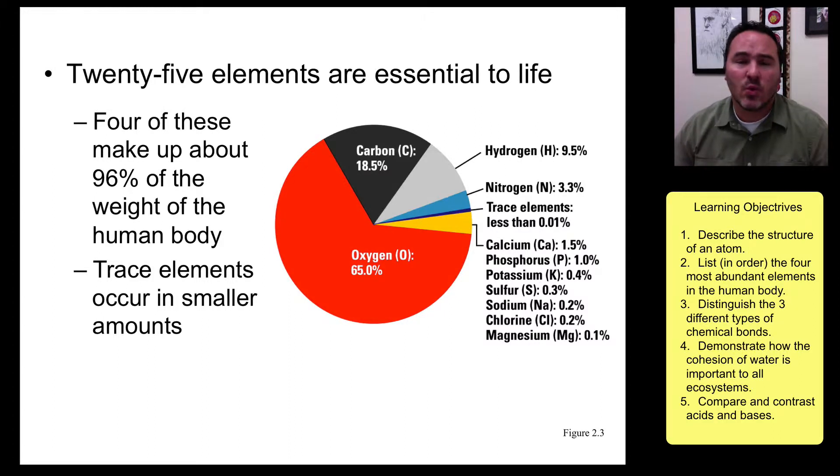Of all of those elements, about 25 are essential for life. Of the 25, there are four really important ones: oxygen, carbon, hydrogen, and nitrogen. There are some others that are not quite as plentiful in life, and then there's even this group of elements that are called trace elements that are also important.